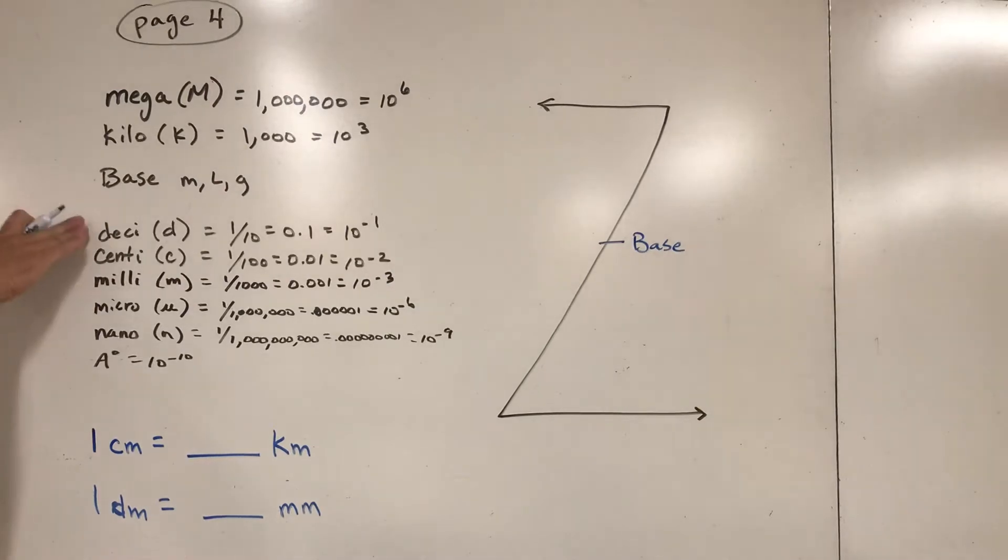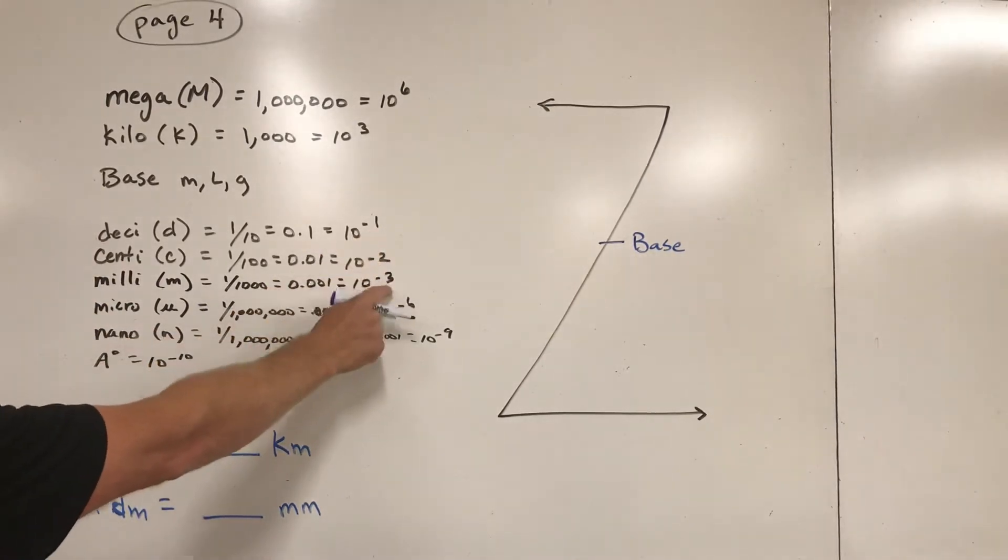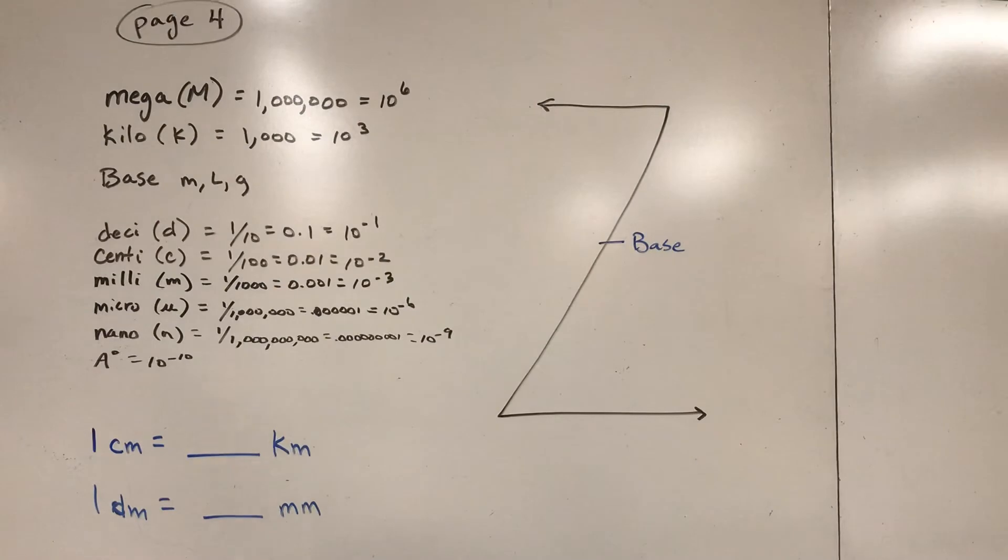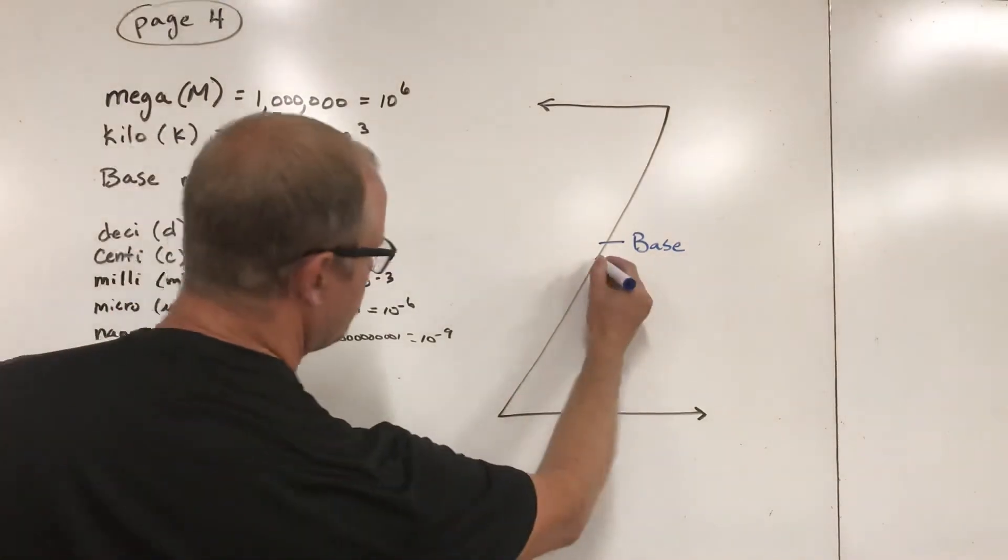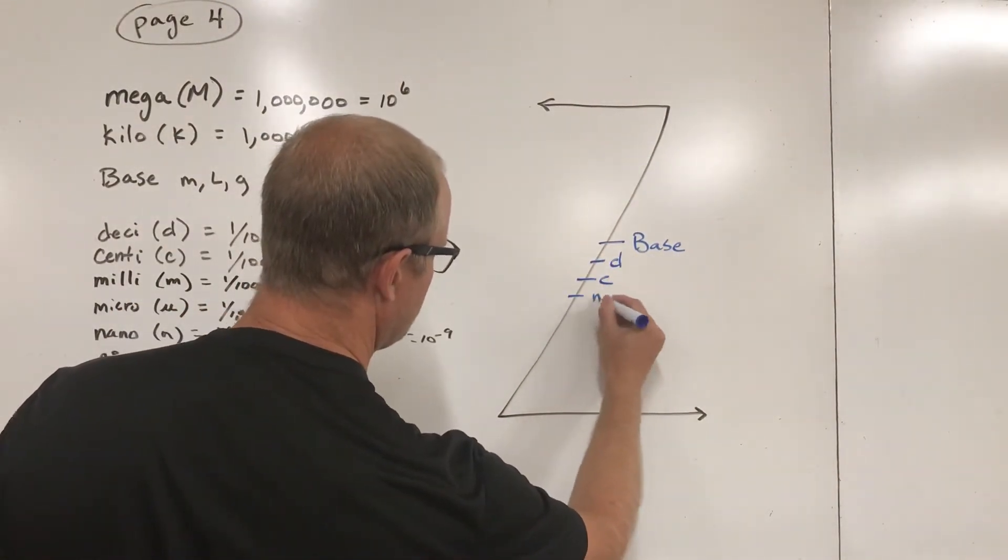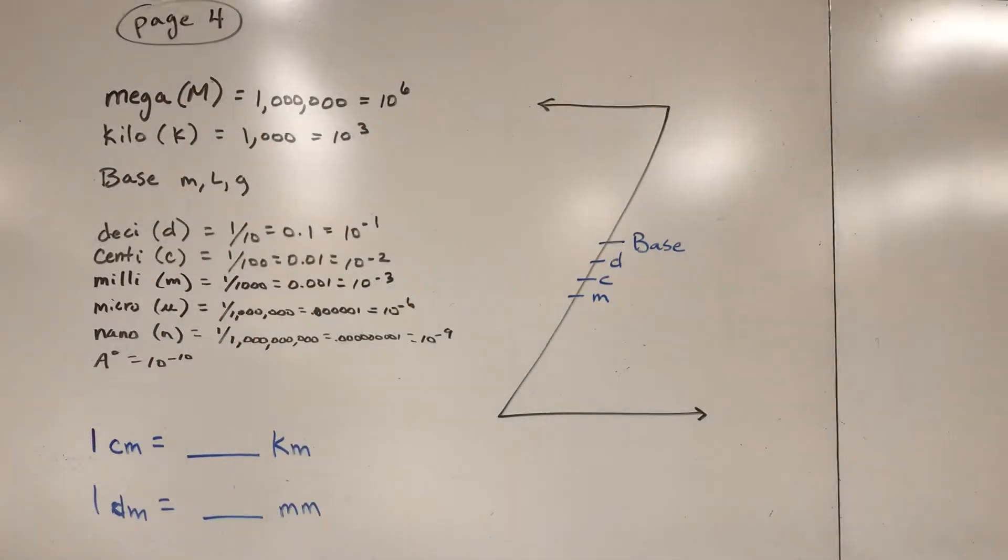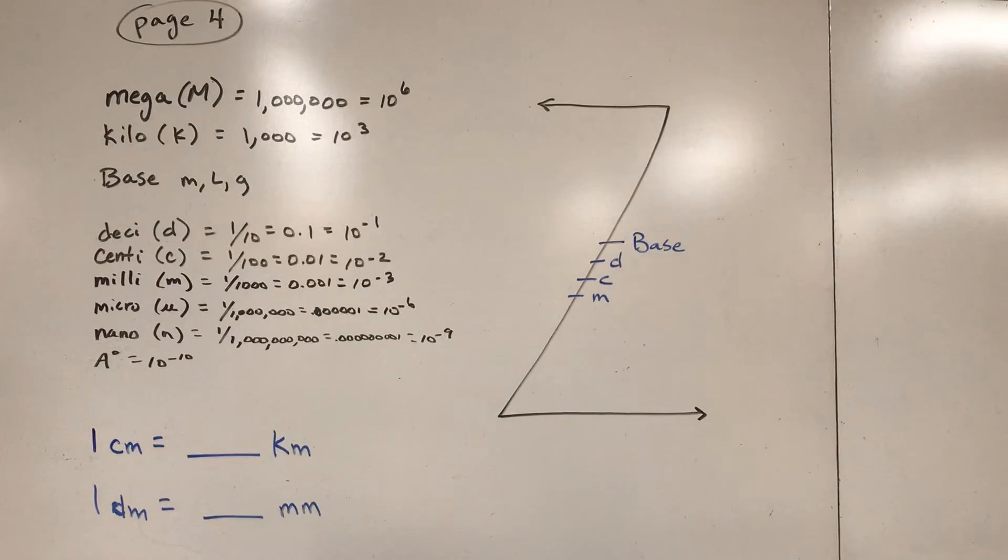That's our meters, liters, and grams. Everything below base is smaller than that base unit. So I got desi, centi, milli. Notice the numbers over here: ten to the minus first, minus second, minus third. What that means is they're each one step away from each other on the z chart. So desi, centi, milli. One step, two steps, three steps away from the base, smaller than that. Each step is a factor of ten.